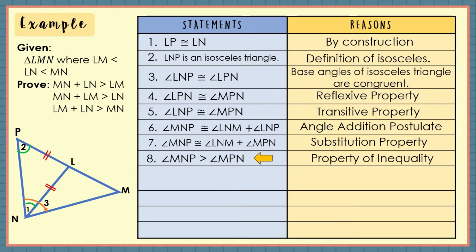For statement number 9, from statement number 8, MP is greater than MN because according to Triangle Inequality Theorem 2, if one angle of a triangle is larger than the second angle, then the side opposite the first angle is longer than the side opposite the second angle.